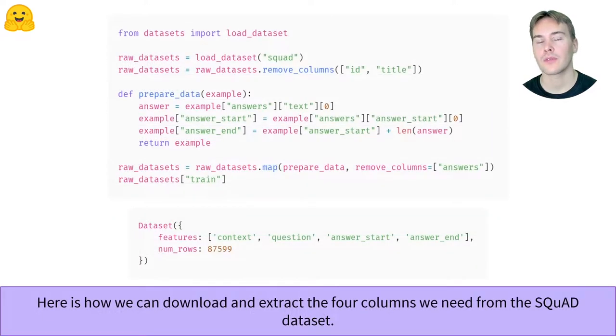For example, we'll use the SQuAD dataset in which we remove columns we won't use and just extract the information we will need for the labels, the start and the end of the answer in the context.